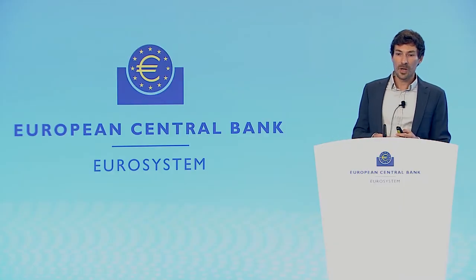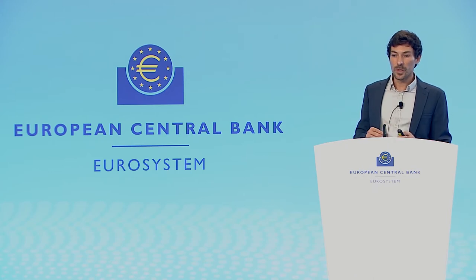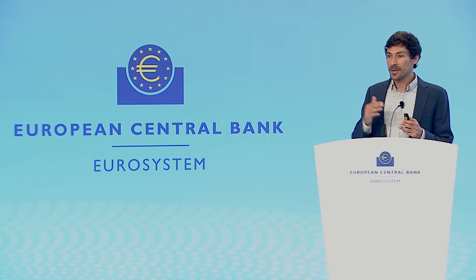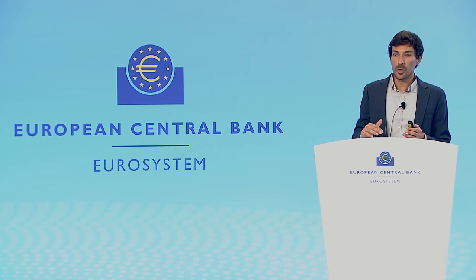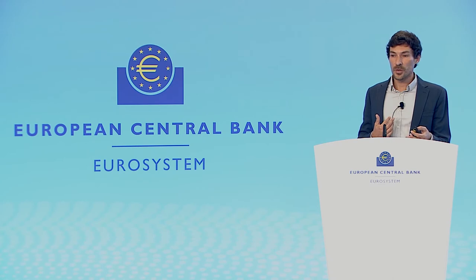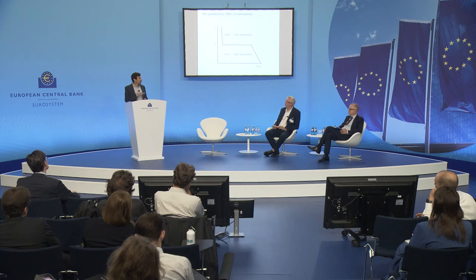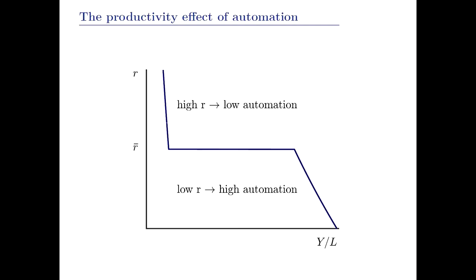Graphically, with the interest rate on the vertical axis and labor productivity on the horizontal axis, you can see a jump in productivity around R-bar. When the interest rate drops from above to below R-bar, firms change their use of automation technology and this gives a boost to labor productivity. In reality there is no such sharp threshold, but even a smoother relationship — as we study in the appendix — preserves the main message: over a central range of the interest rate, changes in the interest rate affect firms' use of automation, and labor productivity reacts particularly strongly.